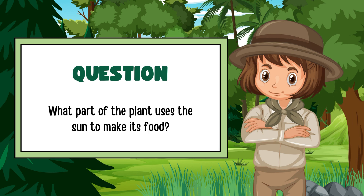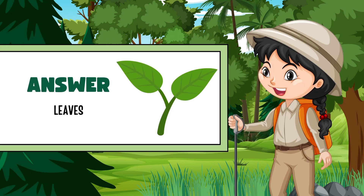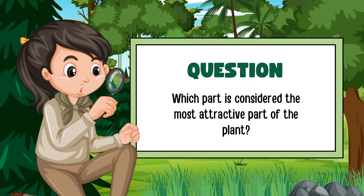Question number one: what part of the plant uses the sun to make its food? The answer is leaves.